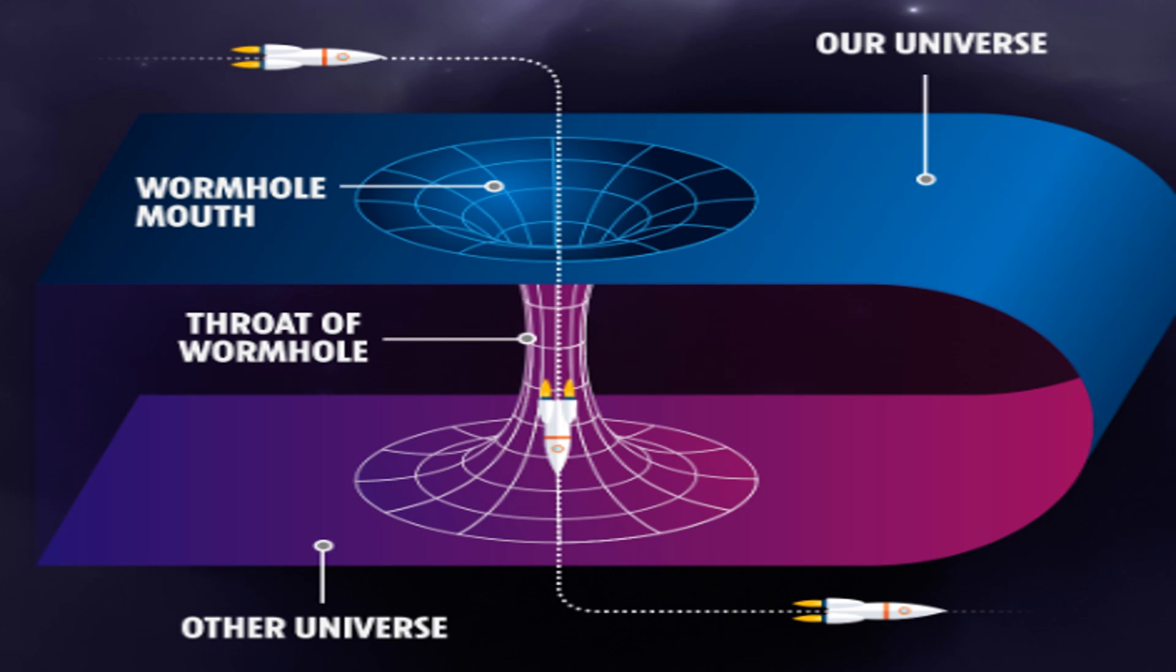If microscopic black holes were produced in the LHC, they would decay almost instantly, about 10 to the negative 27th power in seconds, in a burst of particles. This rapid disintegration would result in a distinctive signature in the detectors characterized by an unusually large number of particle tracks. Detecting these events would provide indirect evidence of extra dimensions and new physics which go beyond the standard model.